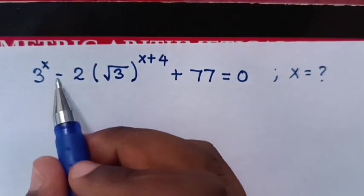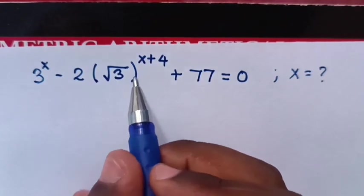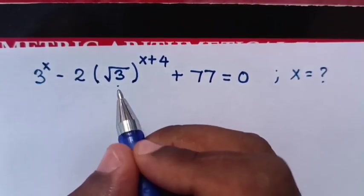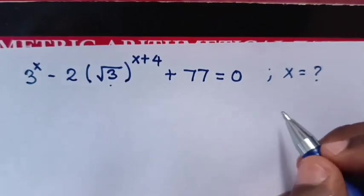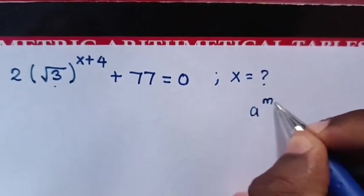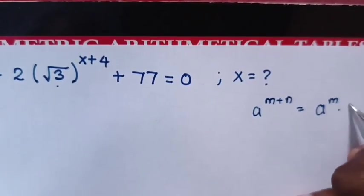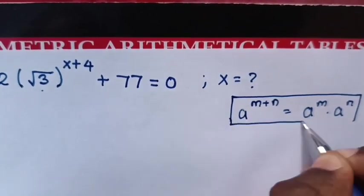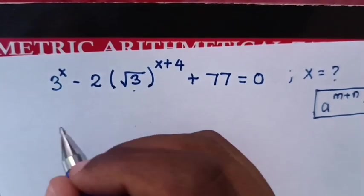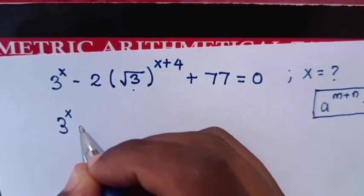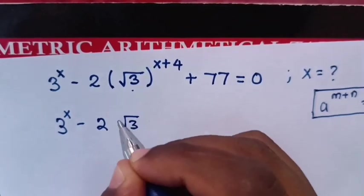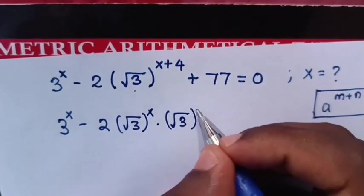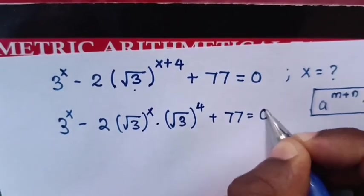Hello. To solve for 3^x minus 2 times the square root of (3^x + 4) plus 77 equals 0, find the value of x. From the square root of 3^(x+4), we apply the exponential power rule: a^(m+n) = a^m times a^n. So we multiply the square root of 3 with its powers. Our equation becomes 3^x minus 2 times √3^x times √3^4 plus 77 equals 0.